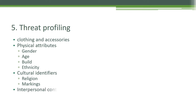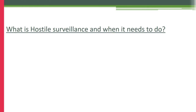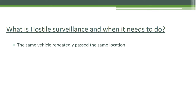Other profile elements include religion, markings, interpersonal contact, and the cultural context of personal space — such as family group. Hostile surveillance is the continuous monitoring of a suspicious person. If you find suspicious activities, the CCTV operator should monitor continuously, following the person from one place to another. Indicators that require hostile surveillance: number one, the same vehicle repeatedly passing the same location — one time, two times, three times.